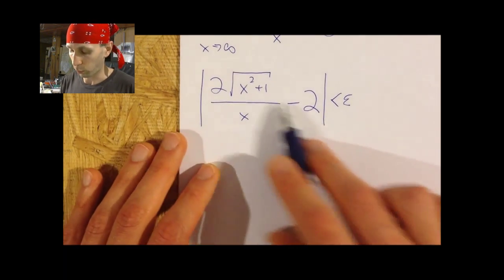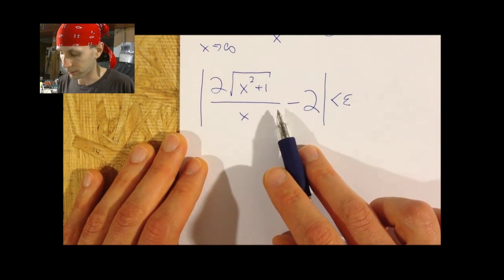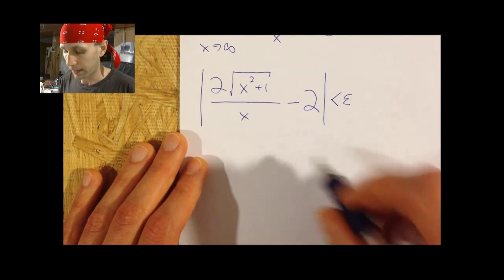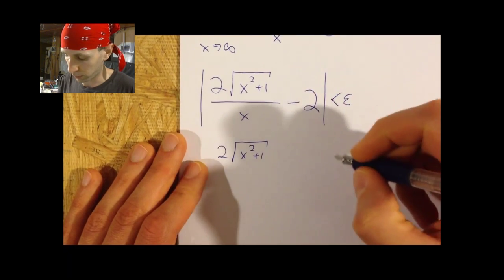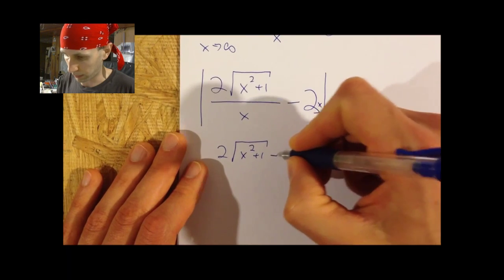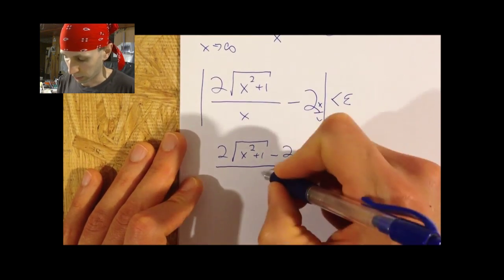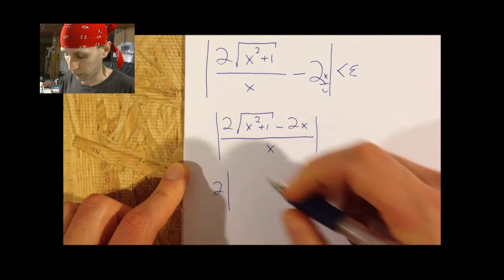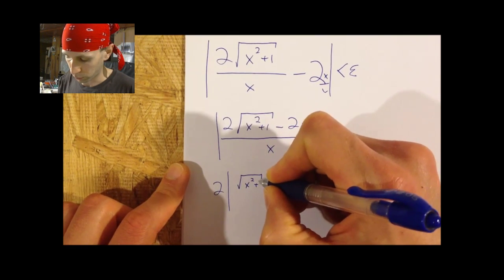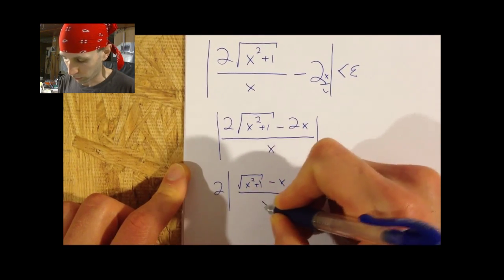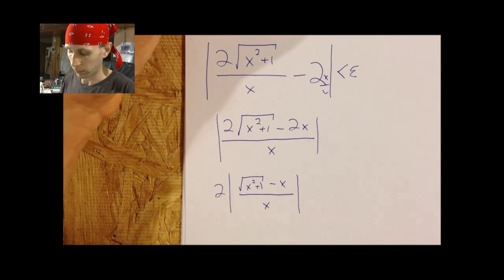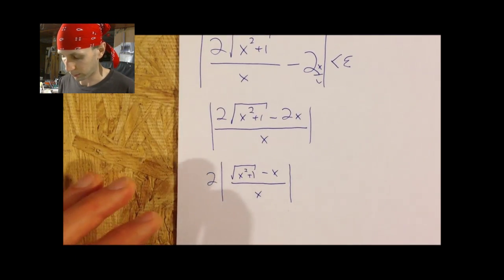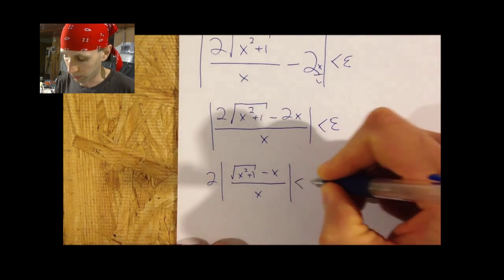I'm going to do the same thing I've been doing — work with this expression and show that I can find an N large enough to make it less than any number you can think of. So I start the same way, add these up and try to make it a little more user-friendly. That'll be x over x, minus two x over x. I'm going to get rid of the twos by pulling them right through the absolute value bars, since all the action is on the inside — leaving the square root of x squared plus one, minus x, over x.